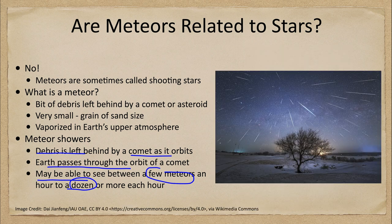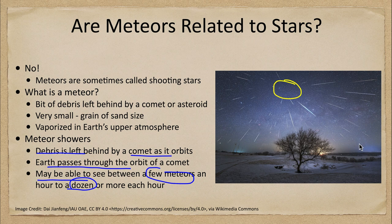You would never see this many all at once — this image is taken over an extended period of time during a meteor shower, allowing us to see each individual meteor. You can note how they seem to come from one single point in the sky. That's because they're all following the same orbit and traveling parallel to each other, so they appear to converge off in the distance.